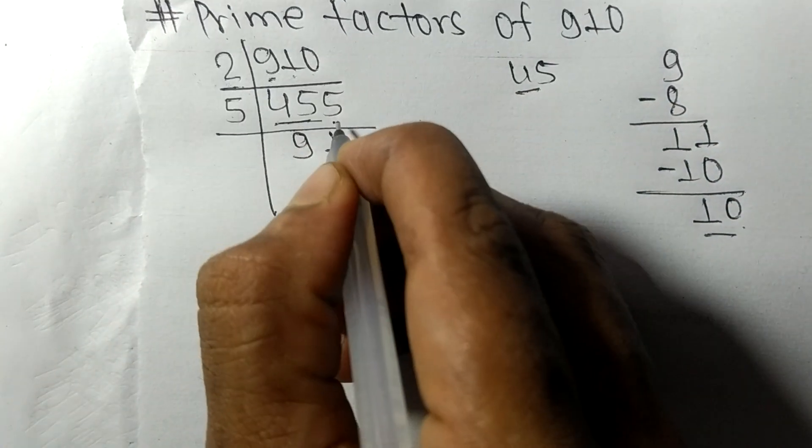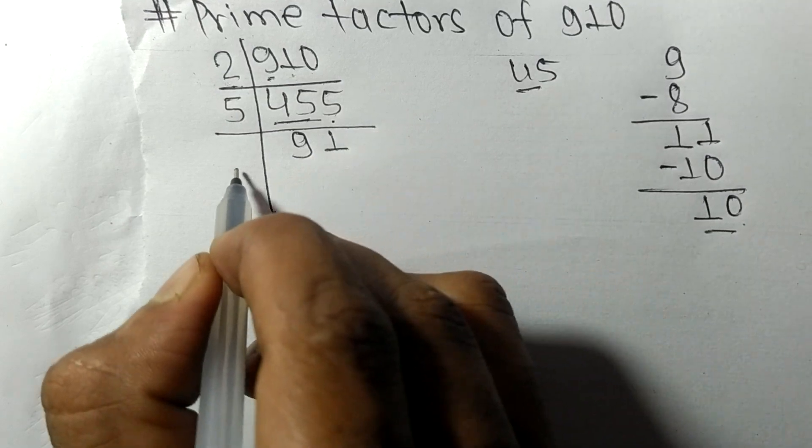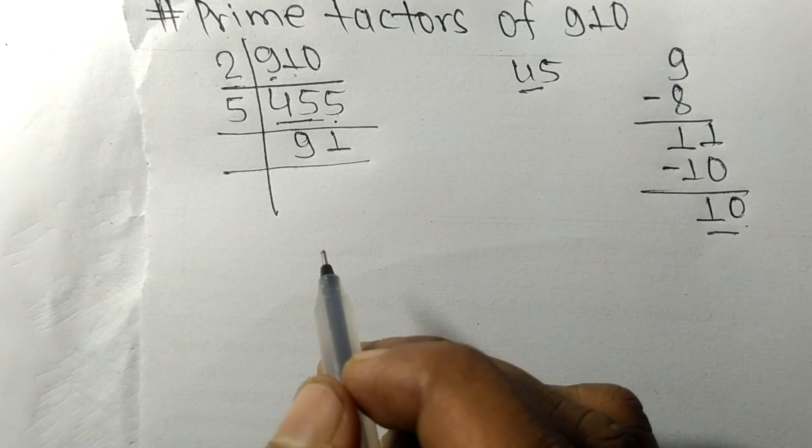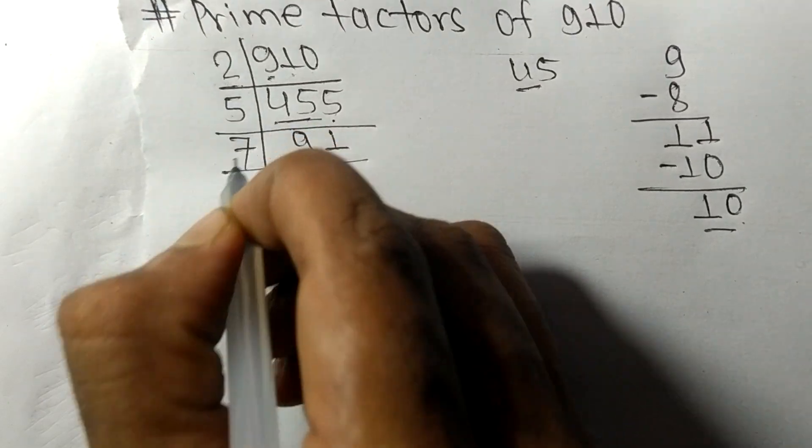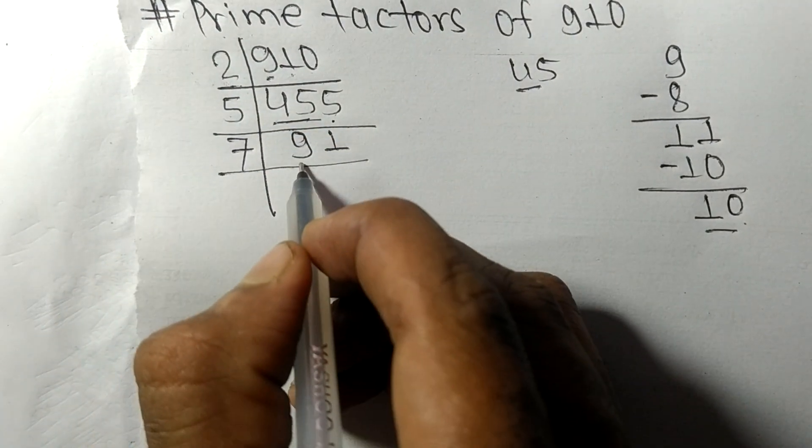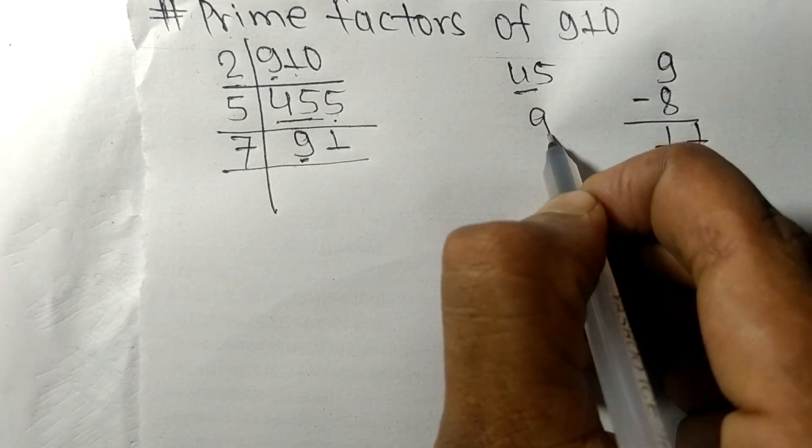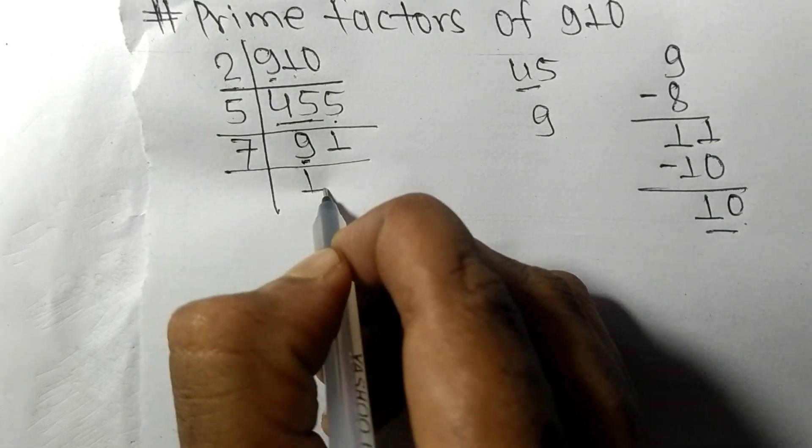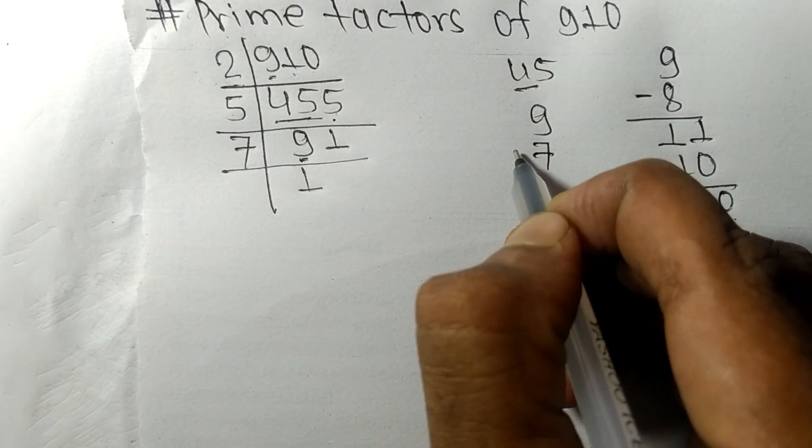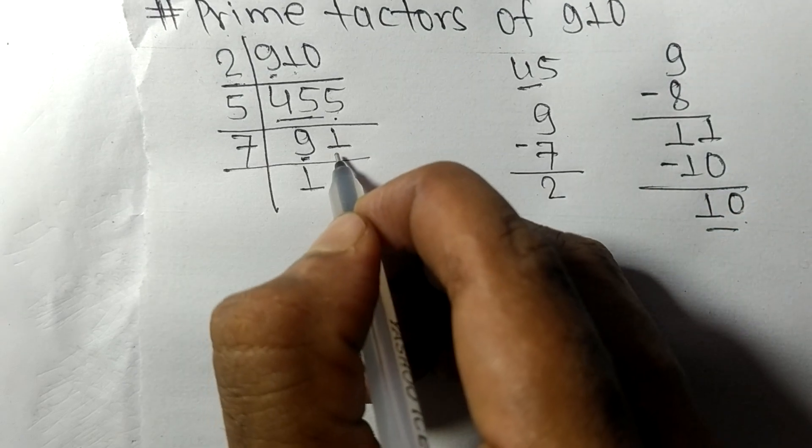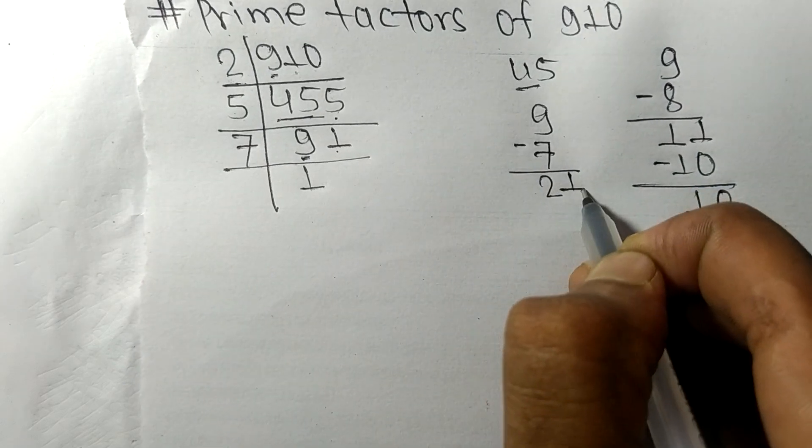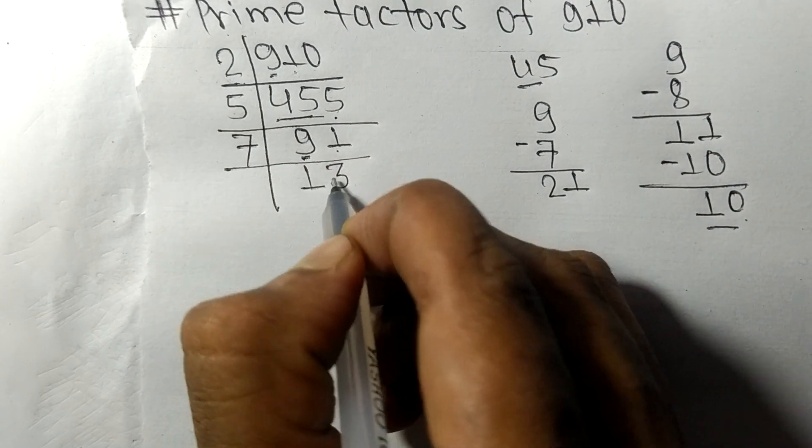Now we got 91 which is exactly divisible by 7. First we have 9, so 7 times 1 means 7. On subtracting we get 2, and this one makes 21. 7 times 3 means 21.